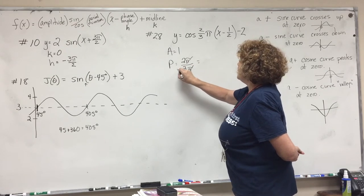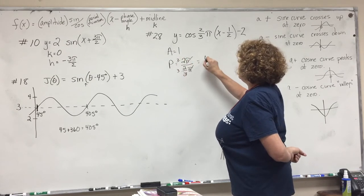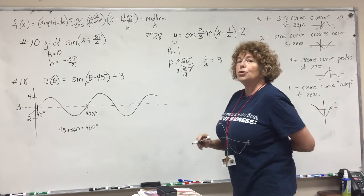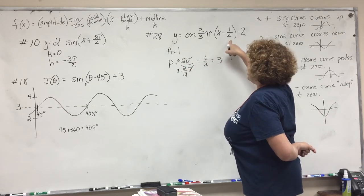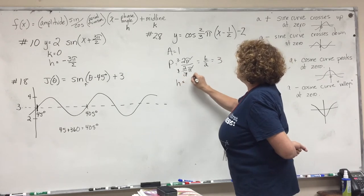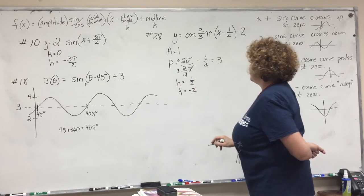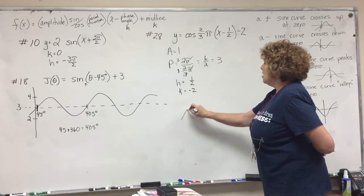And multiply top and bottom by 3, which would be 6π over 2, which would be—my period is 3. My H which is 1/2 and my K is negative 2.